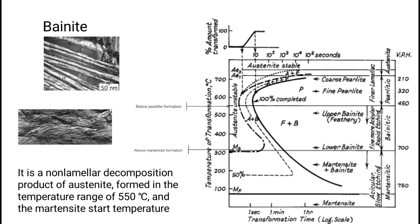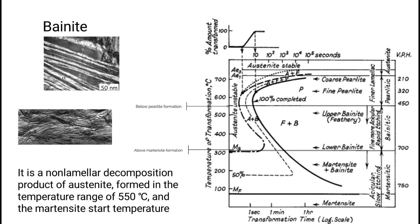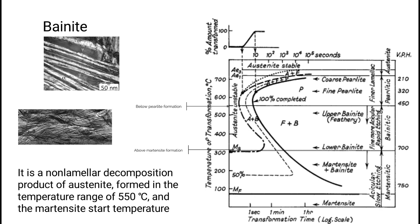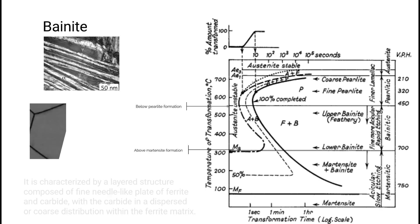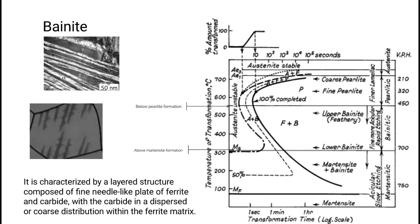It is a non-lamellar decomposition product of austenite formed in the temperature range of 550 degrees Celsius and the martensite start temperature. It is characterized by a layered structure composed of fine needle-like plates of ferrite and carbide with the carbide in a dispersed or coarse distribution within the ferrite matrix.